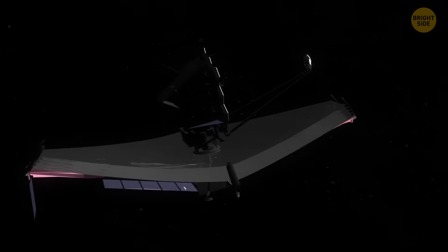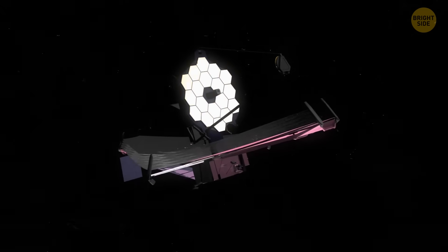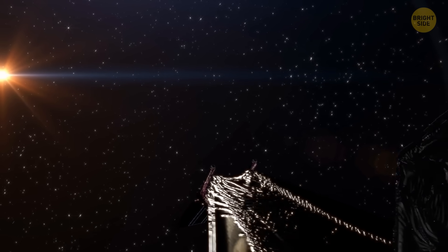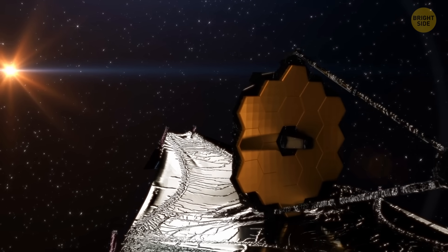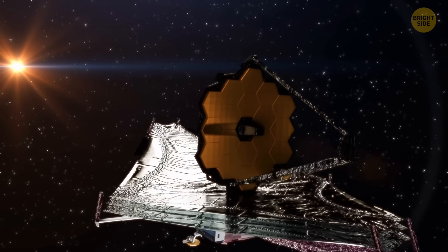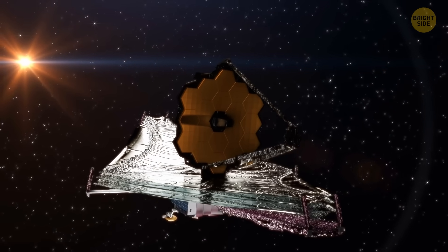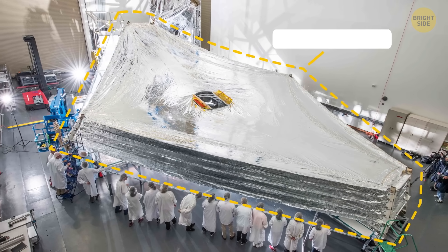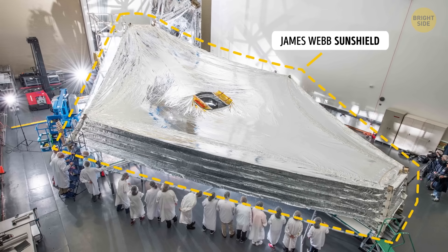James Webb's telescope side is cooling itself down, and its temperature doesn't rise higher than negative 370 degrees Fahrenheit. That's cool enough to make liquid nitrogen. A truly enormous five-layered sunshield surrounds the telescope and reflects away as much sunlight as possible, letting the telescope stay cool.